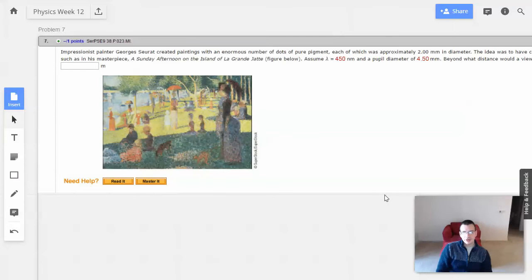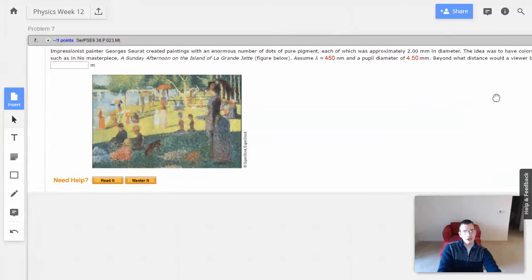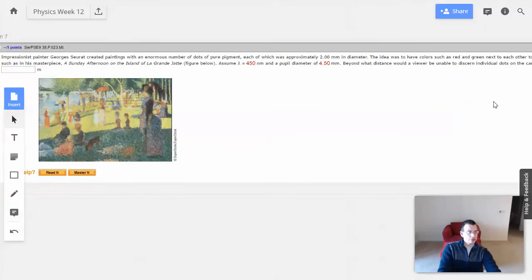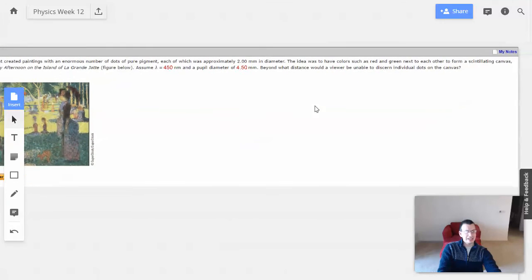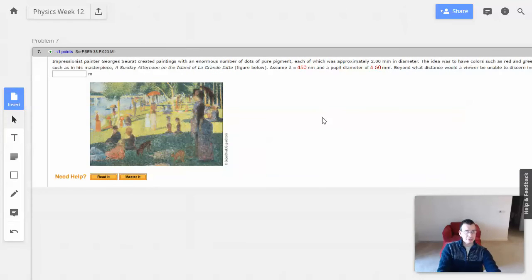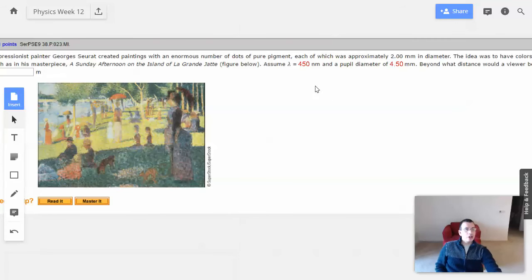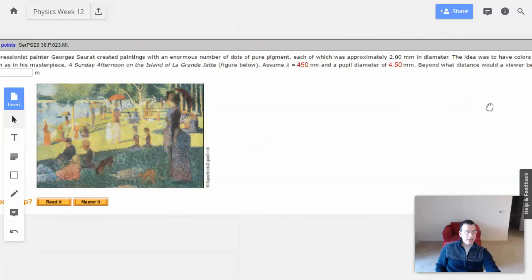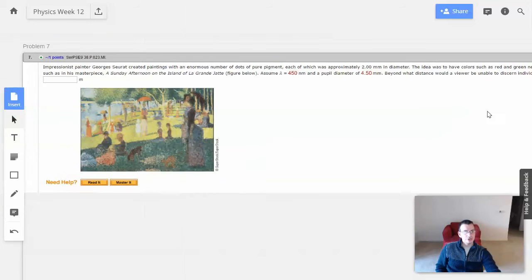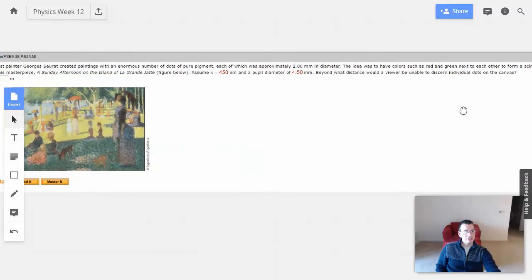Week 12, problem 7. Pointillist painter George Seurat created paintings with an enormous number of dots of pure pigment, each approximately 2mm in diameter. The idea was to have colors such as red and green next to each other to form a scintillating canvas, such as his masterpiece, A Sunday Afternoon on the Island of La Grande Jatte. Assume wavelength is 450 nanometers and a pupil diameter of 4.5 millimeters. Beyond what distance would a viewer be unable to discern individual dots on the canvas?